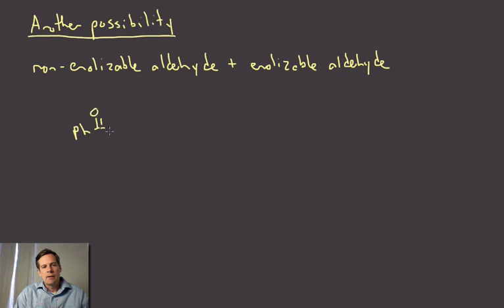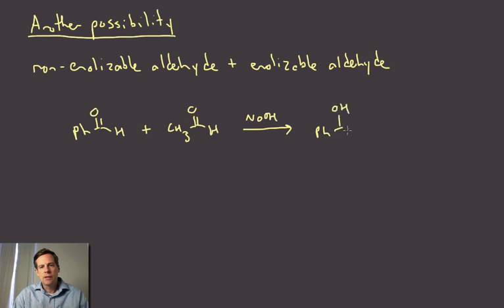Okay. So let's give you an example. We've got, let's say benzaldehyde. That's our non-enolizable aldehyde. Let's say we just really, really needed the product in which acetaldehyde was going to be the nucleophile. Okay. This is a problem again, because we might get, or we would get some of this product, which is the one we want. But of course, we're also going to get a whole mess of the acetaldehyde dimer. So what could we do?